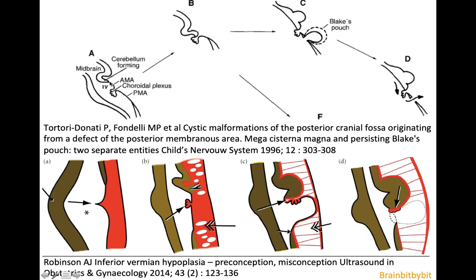The roof of the fourth ventricle gets divided by the primitive choroid plexus into an anterior and posterior membranous area, as you can also see in this picture where the primitive meninges derived from the mesoderm is colored red and the neural tube is colored brown. The primitive choroid plexus starts to produce some CSF before there is a communication between the ventricular system and the subarachnoid space.